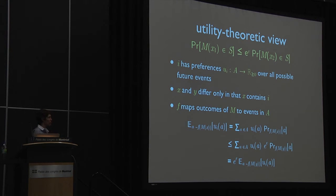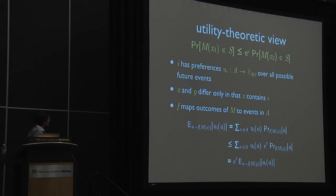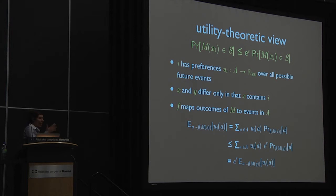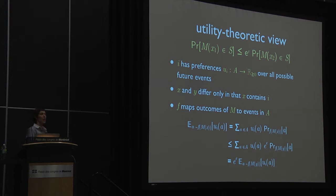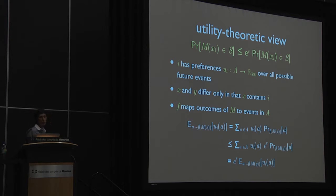This gives a formal connection between differential privacy and approximate truthfulness guarantees. If you're coming from a game theory or mechanism design background, there's a rich and growing literature making connections between privacy and mechanism design — differentially private mechanism design, the value of private information, quantifying harm from privacy losses, compensation for privacy losses. I'm working in that space, but it's not the topic of this tutorial. Feel free to get in touch if you're interested.